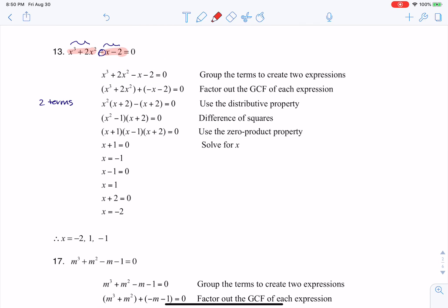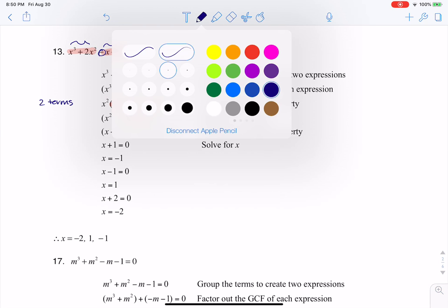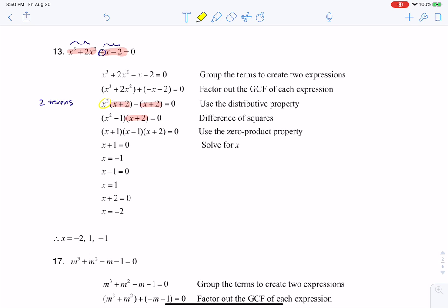Now, these next two terms, if we look at them, this term has an x plus 2, and this term has an x plus 2. So what I can do is I can factor out that x plus 2. And what would I be left with? Well, let's take a look. I would be left with an x squared from this first term, and technically there's a minus 1 there from that second term. And that's where you see me getting the x squared minus 1.